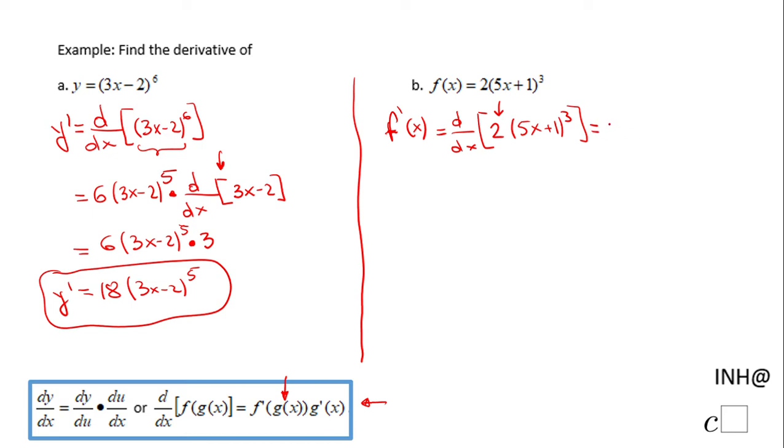So we have 2 times the derivative with respect to x of (5x + 1) to the third power. And from here it's very similar to the first part. I'm going to use first the power rule.